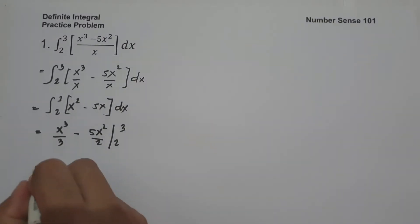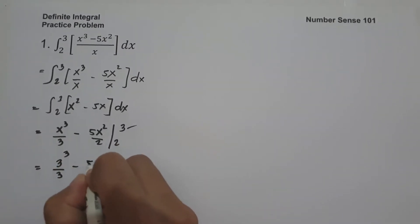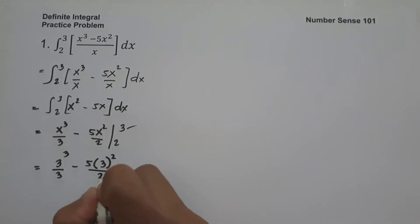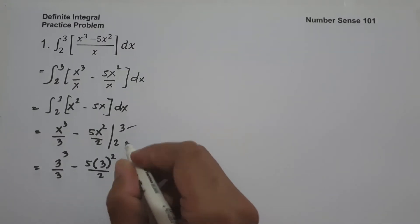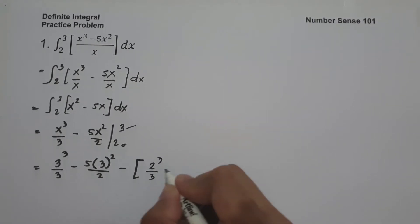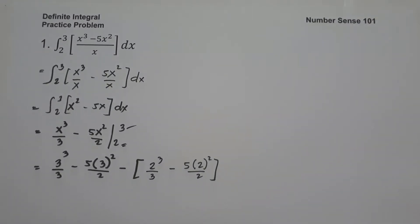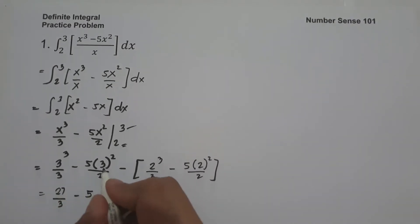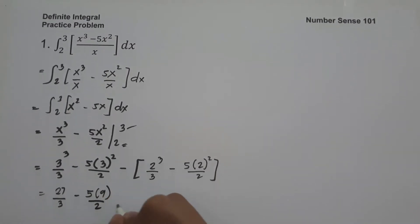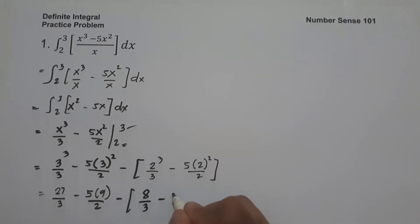Let us substitute the value of x. We are going to have 3 cubed over 3 minus 5 times 3 squared over 2, minus the quantity of 2 cubed over 3 minus 5 times 2 squared over 2.